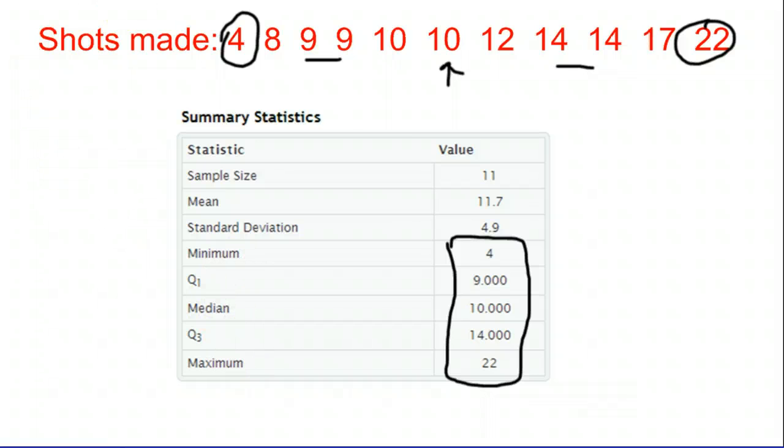But the other numbers we see up near the top, sample size 11 means there's 11 numbers. And then the mean and standard deviation. So the mean is a measure of the center. Standard deviation is a measure on average of how far apart the numbers are.